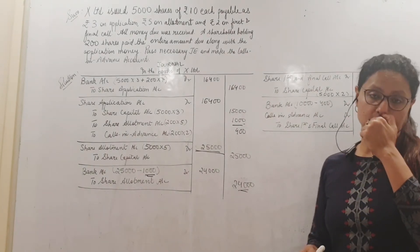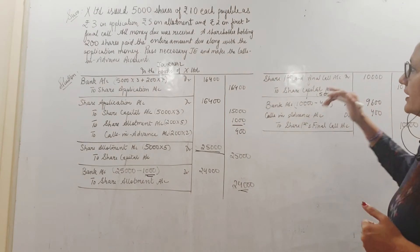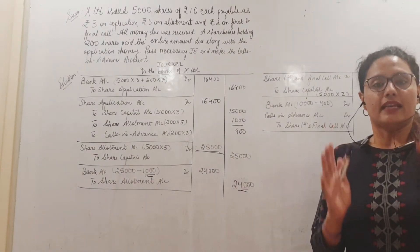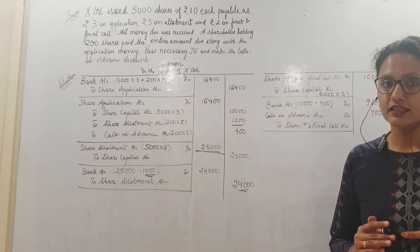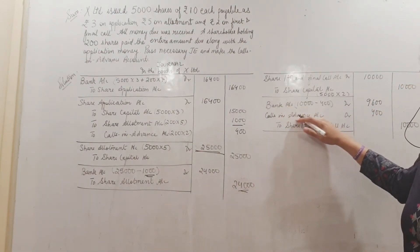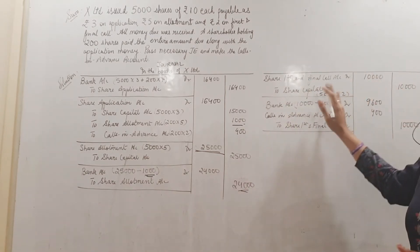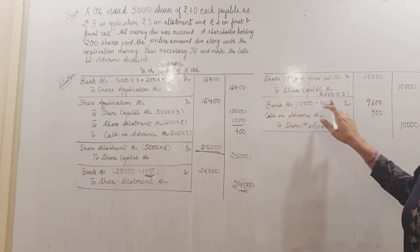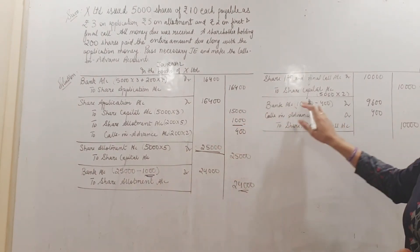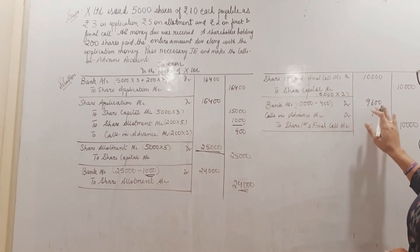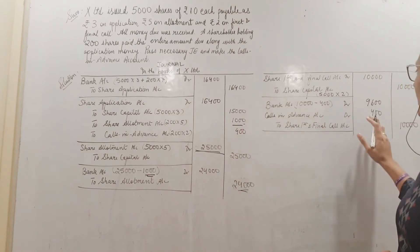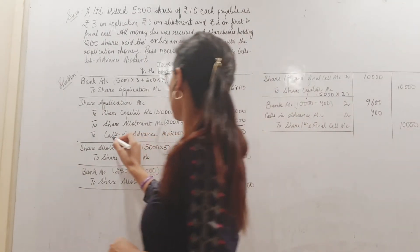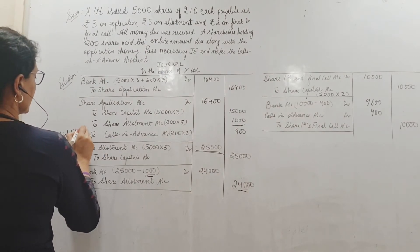Then come to the next installment which is first and final call. First and final call, how much? 2 rupees per share so 5,000 into 2, that is 10,000 rupees. 10,000 rupees I should have received but how much will I actually receive? I will have to adjust the calls in advance. So this is due. So I have credited 10,000 to share capital. Share first and final call debit to share capital. This is the usual entry. Then when we receive the money, the advance money we subtract like we have done for allotment. So 10,000 minus 400, 9,600 comes to my bank right now.